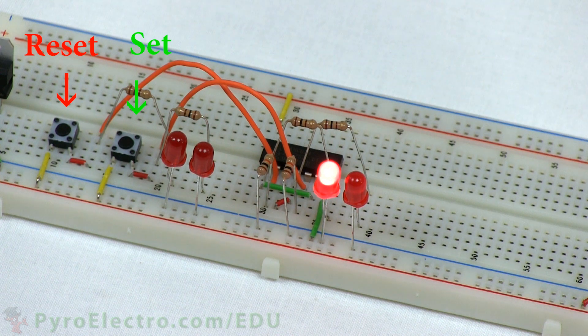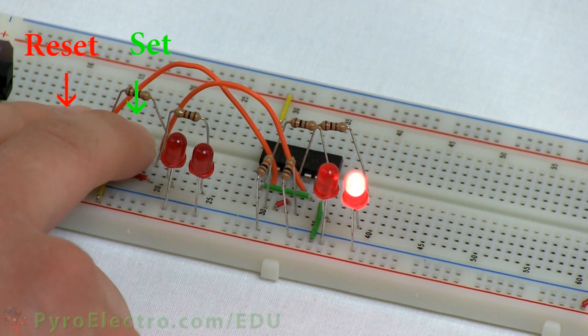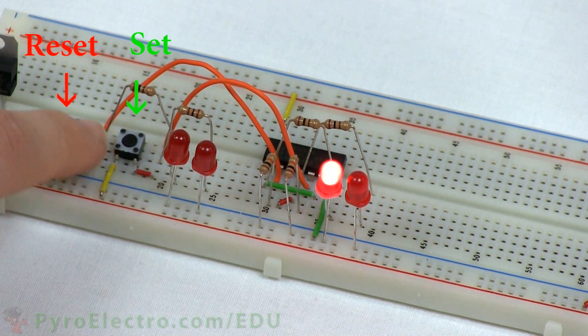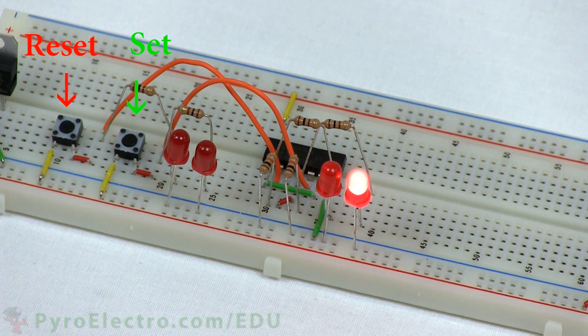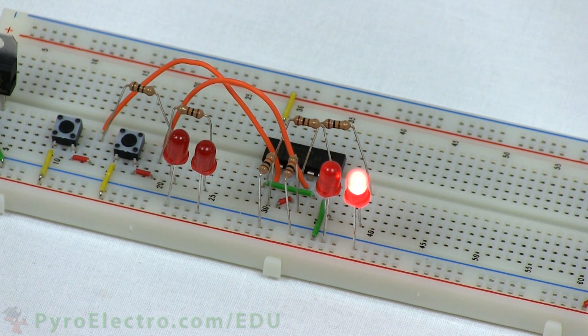The SR latch doesn't like receiving logic 1-1 for set and reset, so the output can potentially be unpredictable if we press both buttons at the same time. Really, this simple latch is meant to receive a short logic 1 pulse to tell it to set or reset its output.